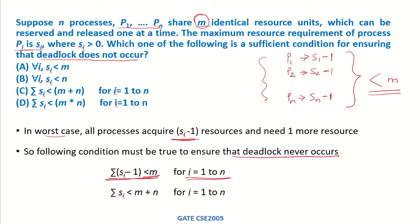So this is the necessary condition that needs to be ensured. Now if we do Si minus 1 for i equals 1 to n, the sum of this for i equals 1 to n would be n.